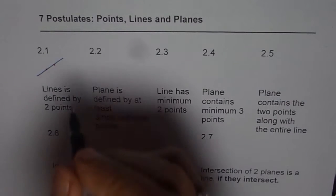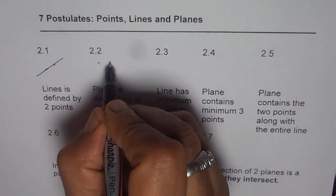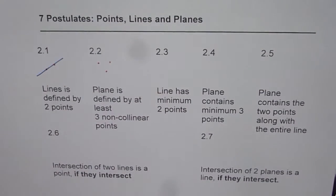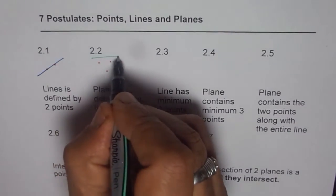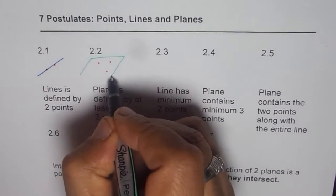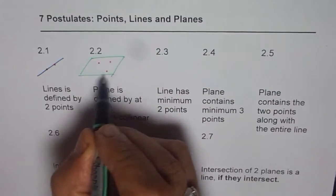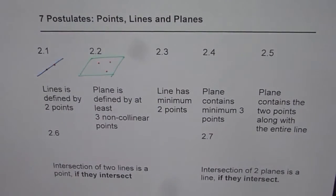Now the second one is definition of plane. It is defined by three points. If we have three non-collinear points then there is uniquely one plane which will contain all three of them.